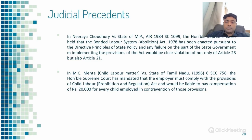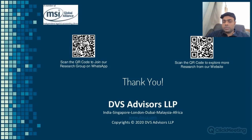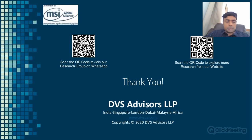In Niriya Choudhury versus State of MP, the Supreme Court held that the Bonded Labour System Abolition Act 1978 was enacted pursuant to directive principles of state policy, and any failure to implement its provisions is a clear violation of not only Article 23 but also Article 21. In MC Mehta versus State of Tamil Nadu, the Supreme Court mandated that employers must comply with the Child Labour Prohibition and Regulation Act and would be liable to pay compensation of ₹20,000 for every child employed in contravention. These were some thoughts in simplified form on fundamental rights under the Constitution, giving the layperson a perspective on the rights we have. Thank you, and hoping to catch up again.